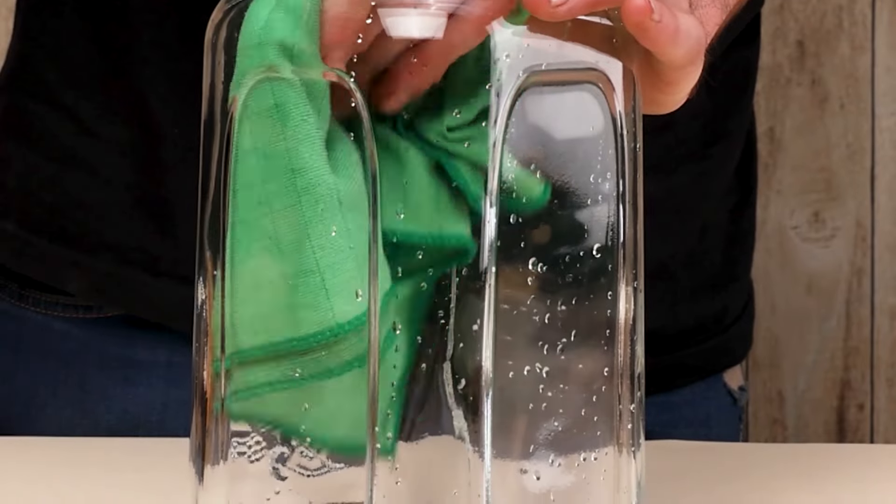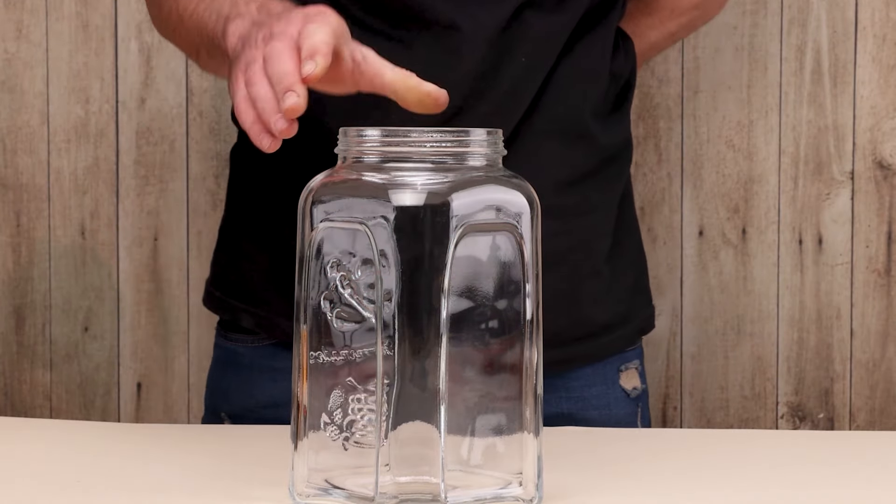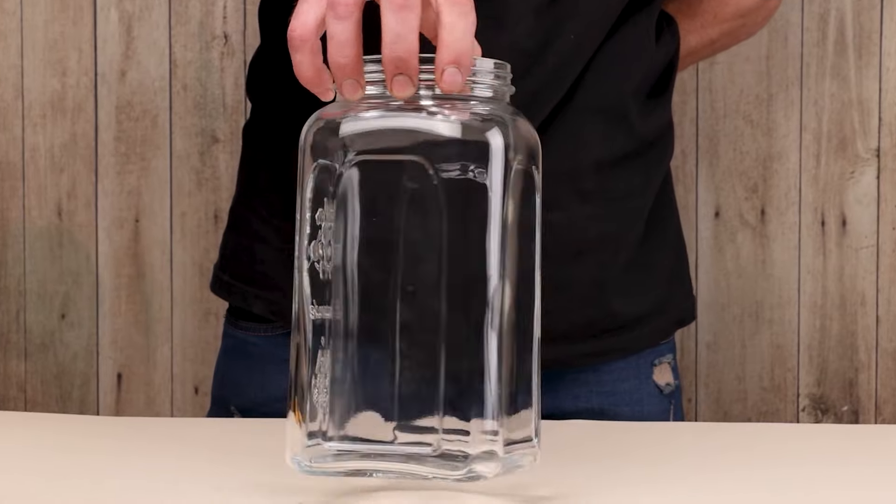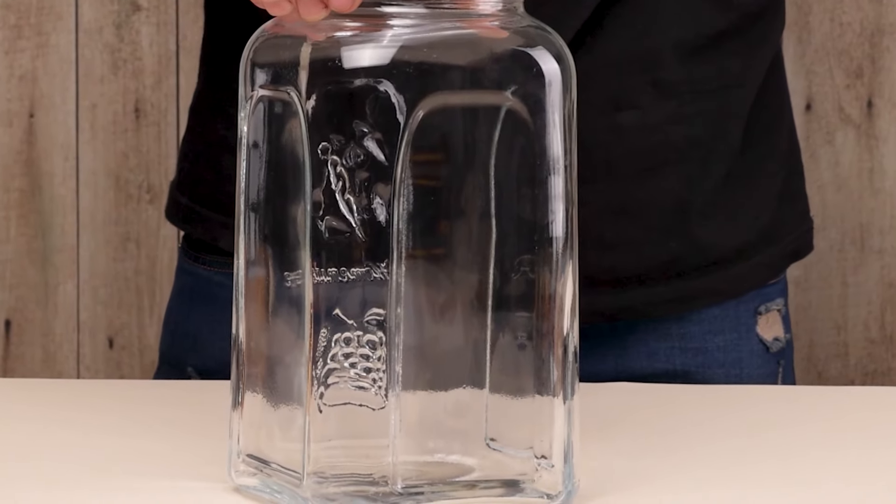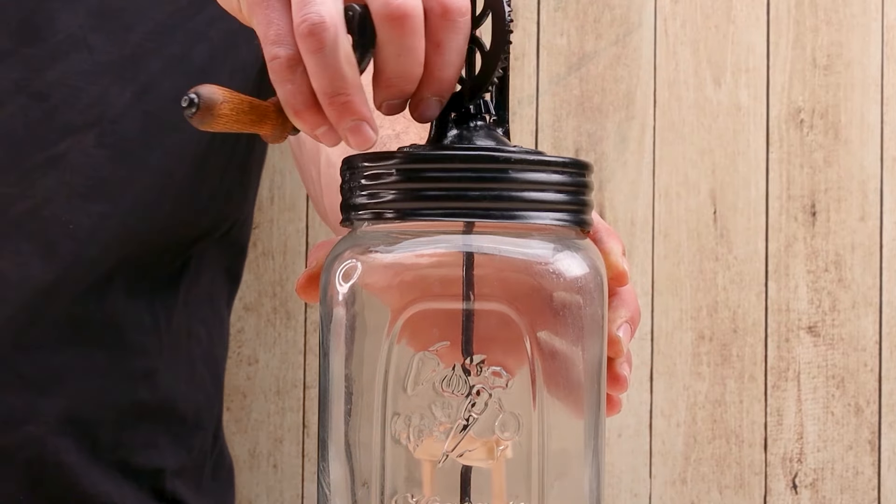The last step of the restoration process is to dry the glass part and assemble all of the pieces together in one. I'm giving the butter churn a quick test before heading to the kitchen.